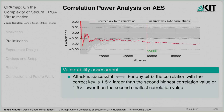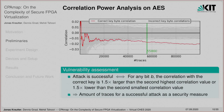We define that a CPA attack is successful if, for any bit B in our correlation model, the correlation with the correct key is 1.5 times larger than the second highest correlation value, or 1.5 times lower than the second smallest correlation value. With this definition, we use the minimum amount of traces for a successful attack as a security measure. In the example shown, this amount of traces would be 55,800.